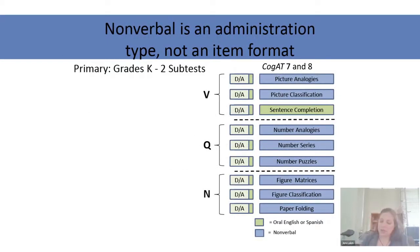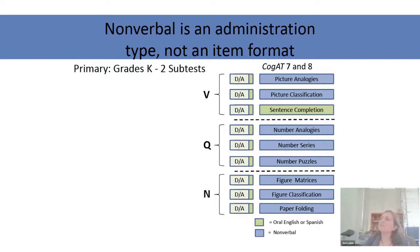Given that COGAT offers a multidimensional measure of general reasoning ability, as well as the three areas of reasoning, even the verbal, quantitative, and nonverbal batteries are themselves multidimensional because there are three different formats per battery. So the verbal, quantitative, and nonverbal reasoning measures are also very interpretable and useful in planning instruction.